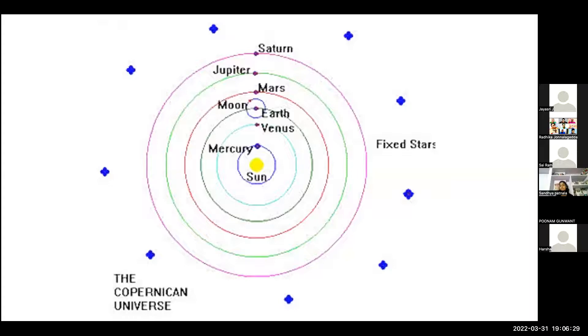Because of Copernicus's model, it was also stated that the moon is not a planet but an object that revolves around the earth. That is why the moon appears twice as big as its size once a month and also disappears once a month.